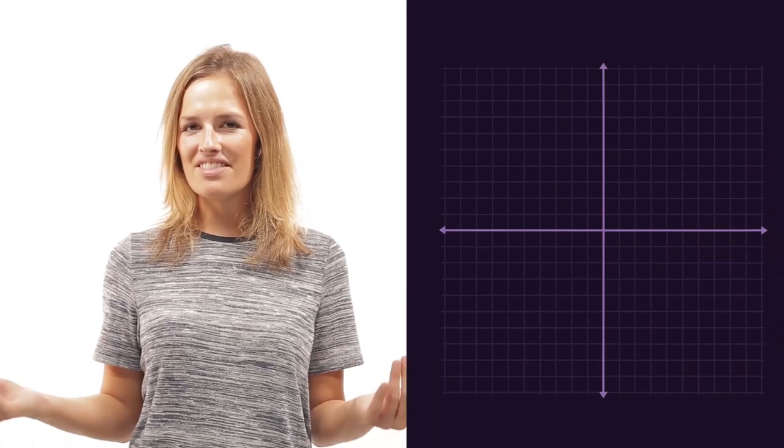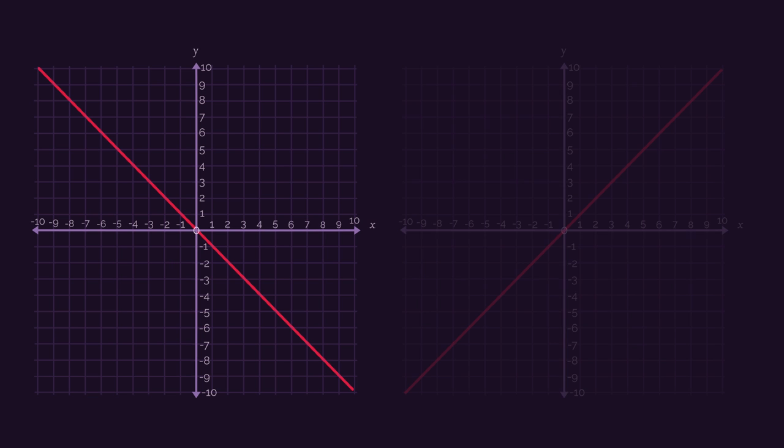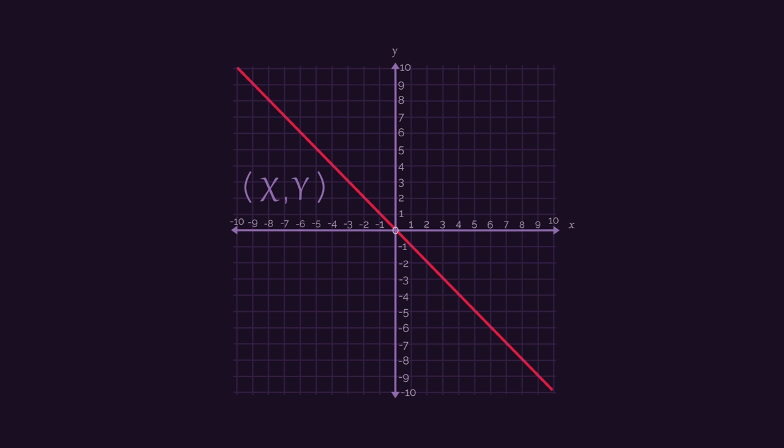So what about this line? It isn't y equals x, because the coordinates aren't exactly the same. Notice how when x is negative 2, y is positive 2. And when x is negative 5, y is positive 5.